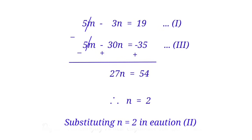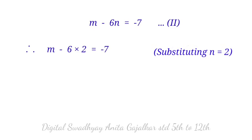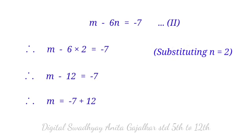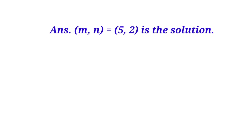Substituting n equal to 2 in equation second (m minus 6n equal to minus 7): m minus 6 into 2 equal to minus 7, so m minus 12 equal to minus 7, giving m equal to minus 7 plus 12, so m equal to 5. The answer (m, n) equal to (5, 2) is the solution.